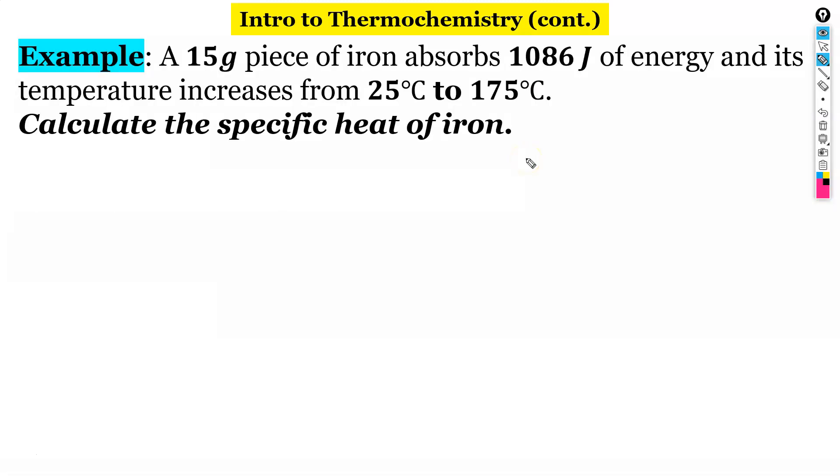Let's look at an example. It says a 15 gram piece of iron absorbs 1086 joules of energy and its temperature increases from 25 degrees Celsius to 175 degrees Celsius. Calculate the specific heat of iron. Well there's a lot of information in the question here. We're going to go through and first pick out all of the pieces of information. Remember the equation that we're going to use is Q equals mc delta T. The energy Q is 1086 joules. The mass of our piece of iron is 15 grams. The initial temperature is 25 degrees Celsius, the final temperature is 175.